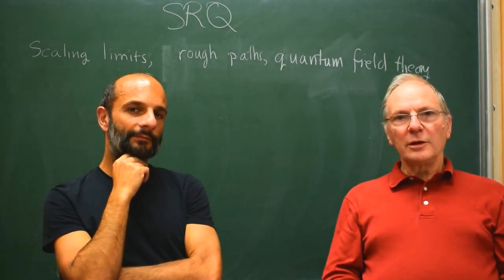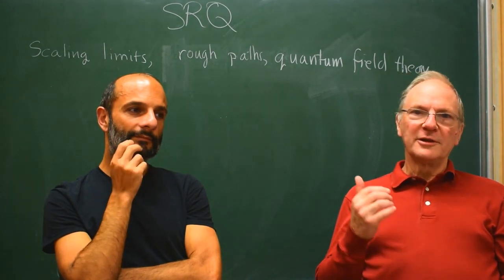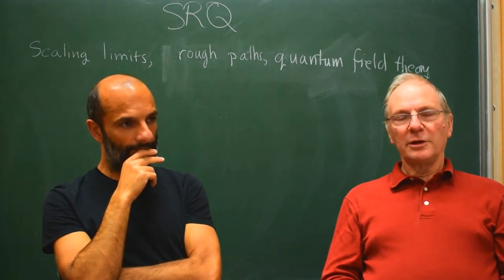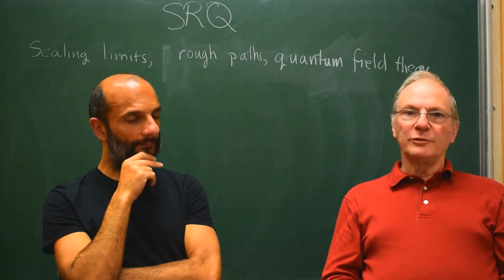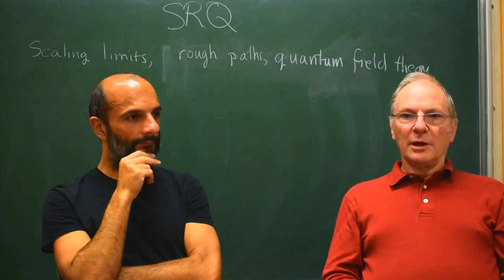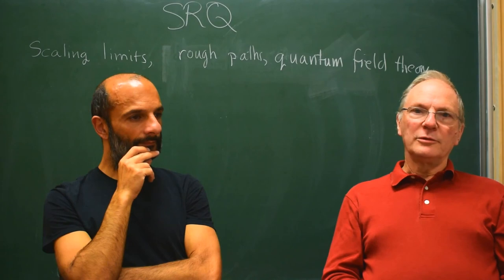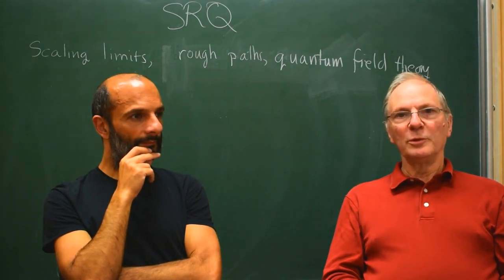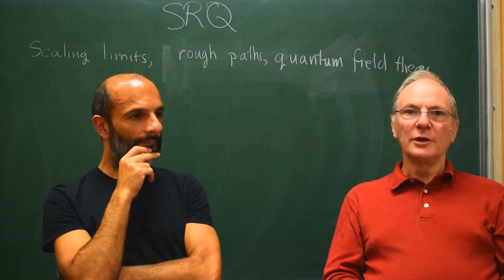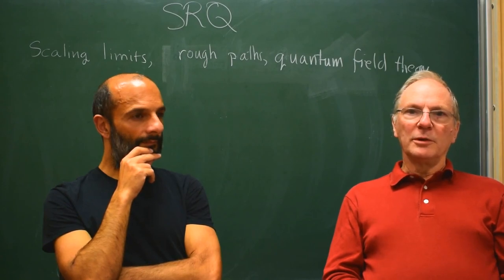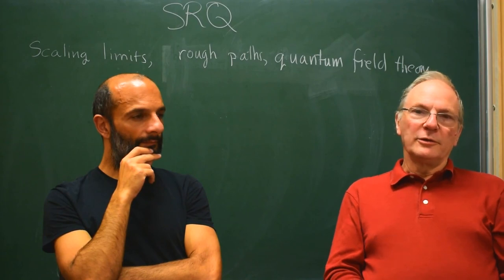Well, the rough path theory of our title up there on the blackboard already has had applications to subjects such as pattern recognition and handwriting recognition and so on. That came about because Terry Lyons, who had some of the important initial ideas, found good ways of encoding random paths in smaller amounts of information that was formerly being used. So this is a kind of spin-off from the general problems that we are looking at right now. It's already happened.